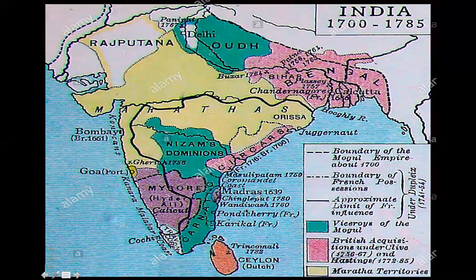Two years later, the British would attack the French stronghold of Pondicherry. In that same year, 1748, a treaty was negotiated in which both posts were returned to the respective countries.